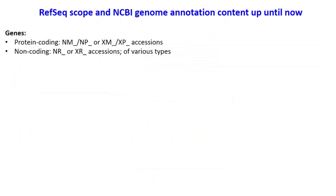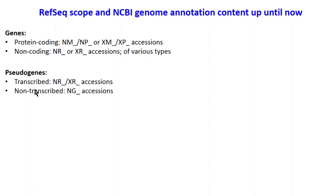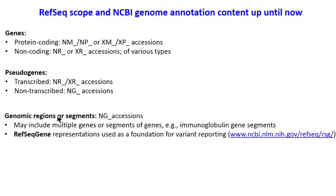So far we have been annotating genes, which can either be protein coding or non-coding. The RefSeq accessions have prefixes that are NMs or NPs for proteins, or XMs, XPs for model accessions that are protein coding, and NRs or XRs for non-coding transcripts. We've also been annotating pseudogenes, which can be transcribed or non-transcribed — the non-transcribed ones get NG accessions — as well as genomic regions or segments with NG accessions, such as immunoglobulin gene segments or clinically relevant gene regions used as a foundation for variant reporting. All of these we consider to be conventional gene type annotations.